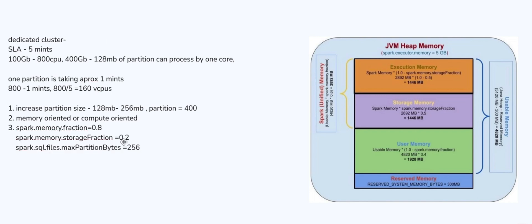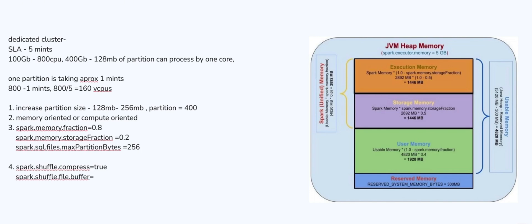By adding this type of configuration, you can execute the memory-oriented job with better performance. You can also enable spark.shuffle.compress set to true, so that shuffle files will be compressed. Additionally, spark.shuffle.file.buffer — by default around 32 KB — you can increase it to 1 MB or even 2 MB. This controls the buffer size for shuffle file I/O operations, and a higher number improves performance.